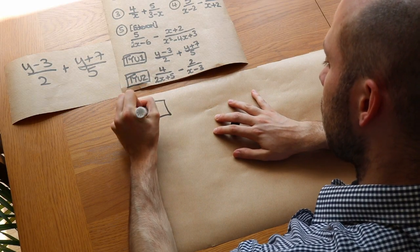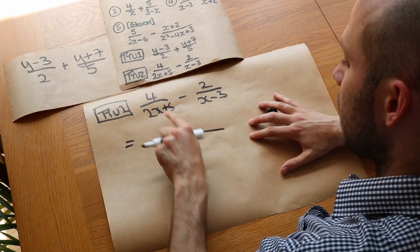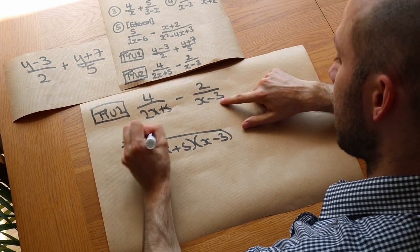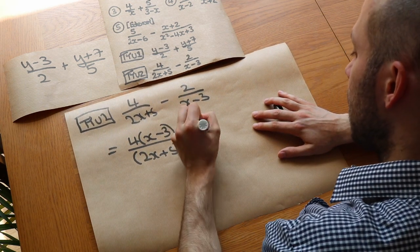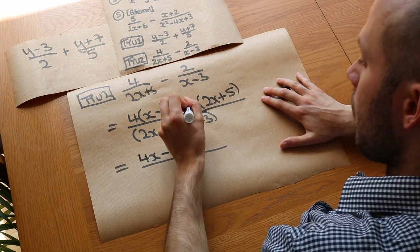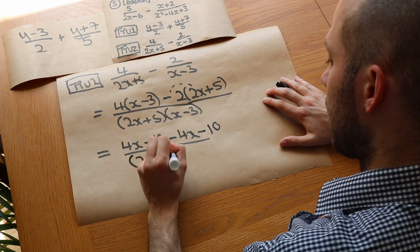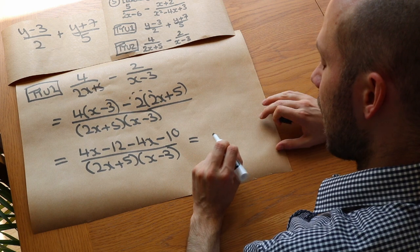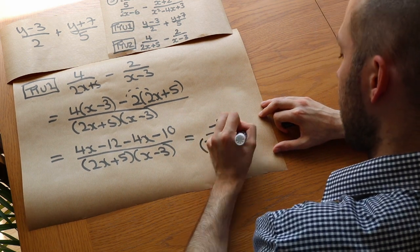For the second test question: 4 over (2x+5) minus 2 over (x−3). We multiply the denominators: (2x+5)(x−3), leaving it factorised. Cross multiplying the numerators: 4 times (x−3), minus — being careful with the sign — 2 times (2x+5). Expanding the numerator: 4x minus 12, minus 4x, and minus 2 times positive 5 which is minus 10. Collecting like terms: 4x minus 4x cancels, and minus 12 minus 10 is minus 22. So the answer is minus 22 over (2x+5)(x−3).